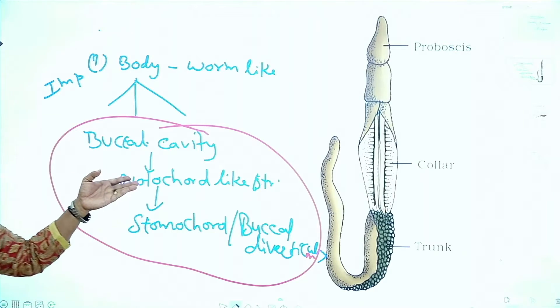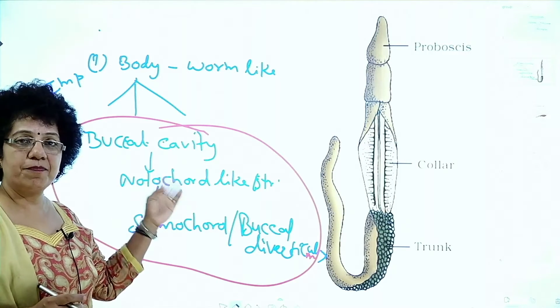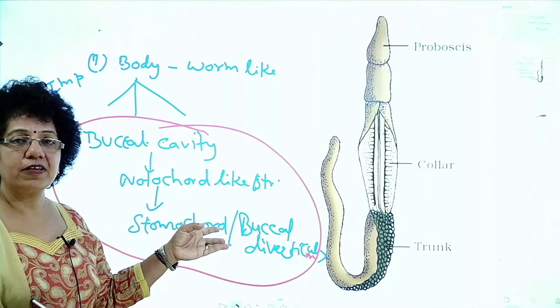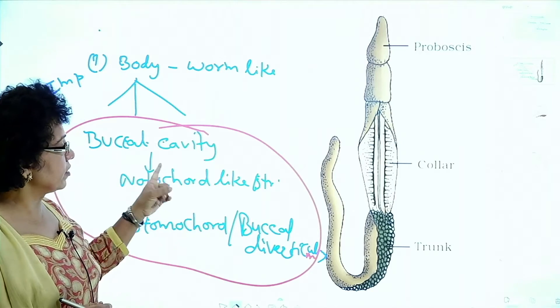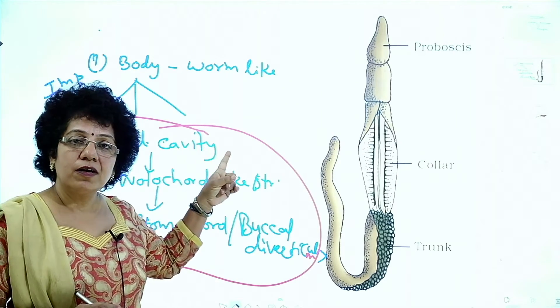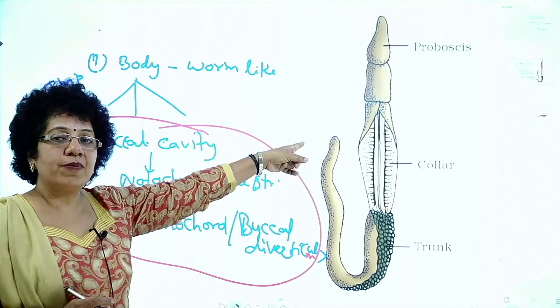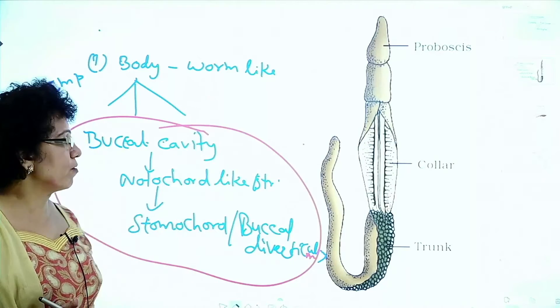Buccal diverticulum is present in the buccal cavity. That is the main feature of Balanoglossus or Hemichordata.